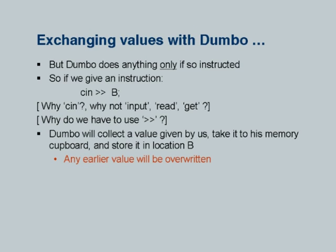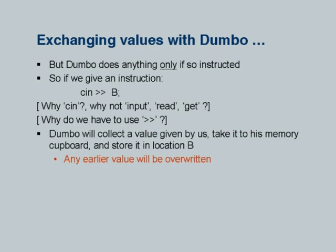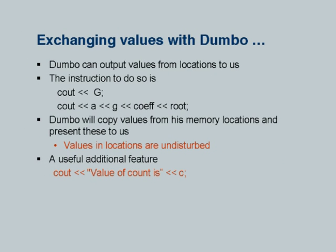Here I am trying to explain this predicament. We say 'cin >> b.' Why 'cin'? Why not 'input'? Why not 'read'? Why not 'get'? Why do we have to use the >> symbol? Instead of students only raising this question in their minds, it is better that we raise these questions ourselves. Then we can say that a programming language defines a syntax and we have to follow it, whether we like it or not. We then explain the input operation: Dumbo will collect a value given by us, take it to his memory cupboard, and store it in location B. An earlier value will be overwritten.